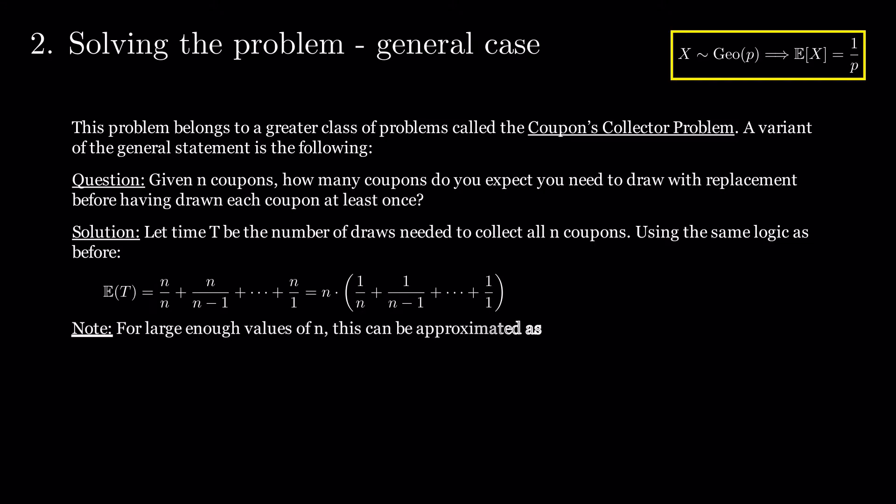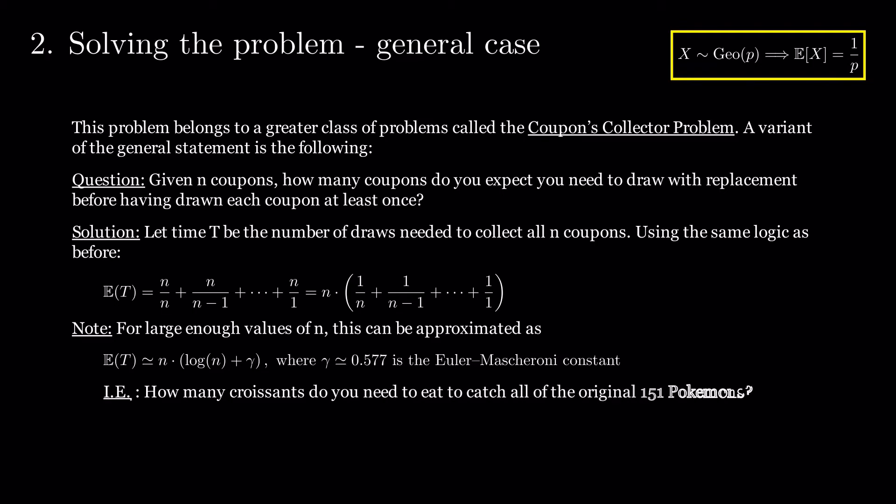For large enough values of n, this can be approximated as n times log n plus gamma, where gamma is the Euler-Mascheroni constant. If we ask ourselves how many croissants do you need to catch all of the original 151 Pokemons, the answer is that you would expect to need around 845.